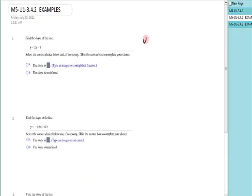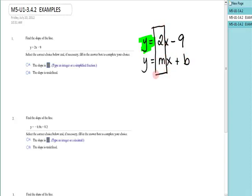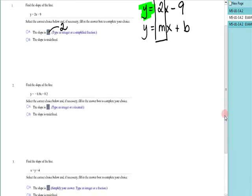Problem number one. I have y equals 2x minus 9. Is it in the right format? The answer is yes, because the right format is y equals. Y equals mx plus b. There's the value of m. So the slope is 2. Just 2. It was great. It was given to us.